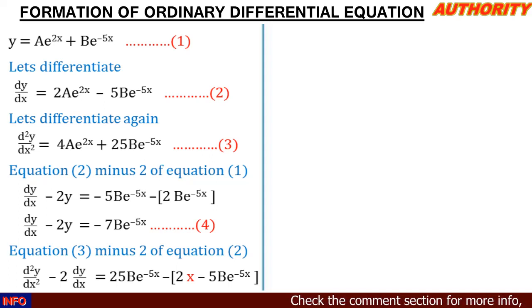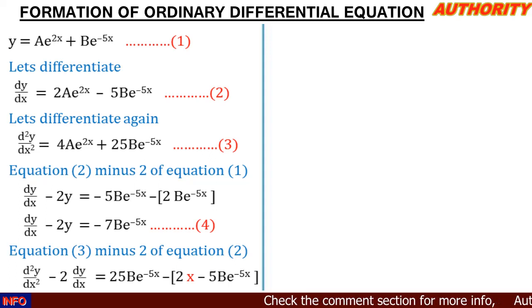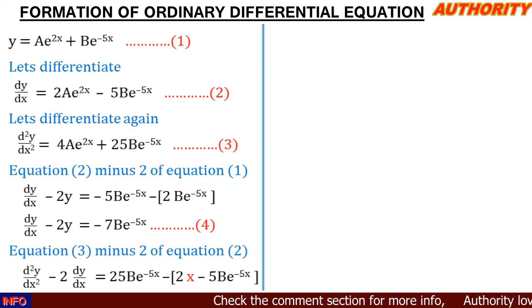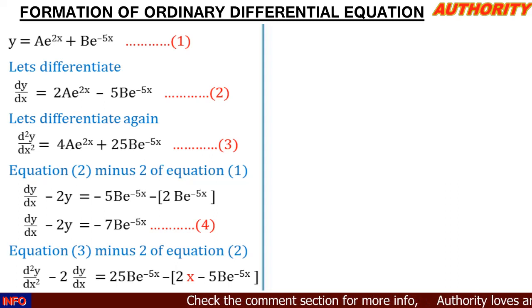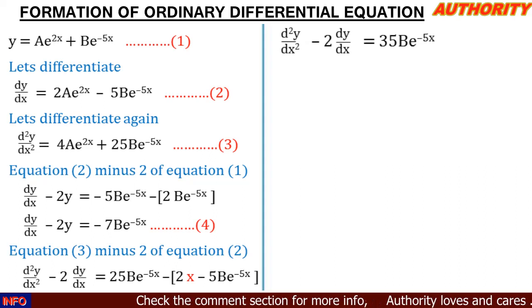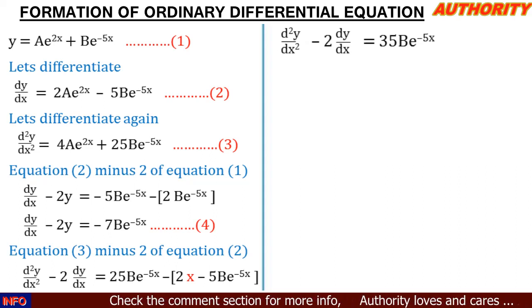Going to the next term, we have 25be^(-5x) minus 2 times (-5be^(-5x)). So -5 times 2 gives 10, and minus times minus gives plus. So we have 25be^(-5x) + 10be^(-5x). That gives us 35be^(-5x). So equation 5 is: d²y/dx² - 2dy/dx = 35be^(-5x).